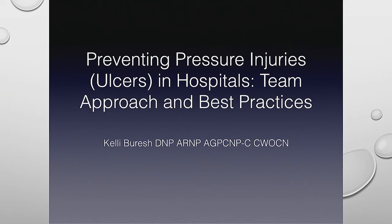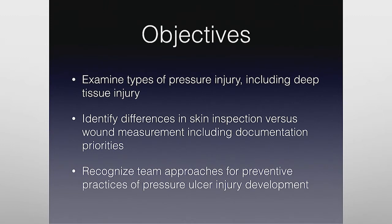I wanted to talk about our objectives today. I'm going to focus on three primary objectives: we're going to look at the types of pressure ulcers including deep tissue injury, identifying the differences in skin inspection versus wound measurement and skin assessment, and recognizing multidisciplinary team members and developing protocols and programs for pressure ulcer prevention.